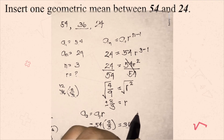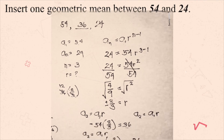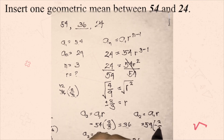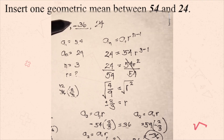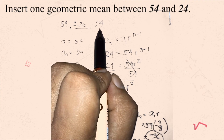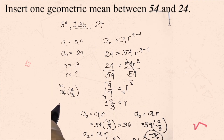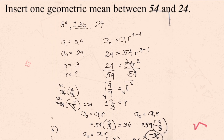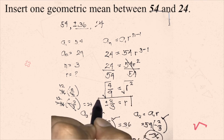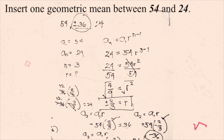Now considering the negative case: a sub 2 equals 54 times negative 2/3, which equals negative 36. To check the third term: negative 36 times negative 2/3 — cancel and get 12 times 2, which is still positive 24. So both positive and negative 2/3 are correct as the common ratio, and the two geometric means are 36 and negative 36.